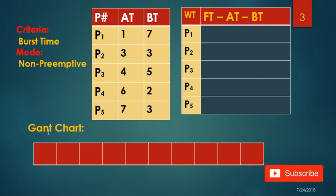One important thing about a Gantt chart is that it always starts from zero. If there is no process which comes at zero, then we will start the Gantt chart from one, meaning the CPU has to sit idle until a process arrives — whether that's arrival time one, two, three, or four. So a Gantt chart always starts from zero.